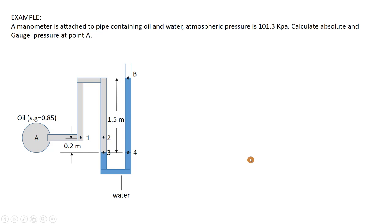Hi friends, today I want to solve a manometer problem. We have this manometer which is attached to a pipe containing oil — the grayish one. We have to find the absolute and gauge pressure at point A. We also have atmospheric pressure which is 101.3 kilopascal. Let's solve it.